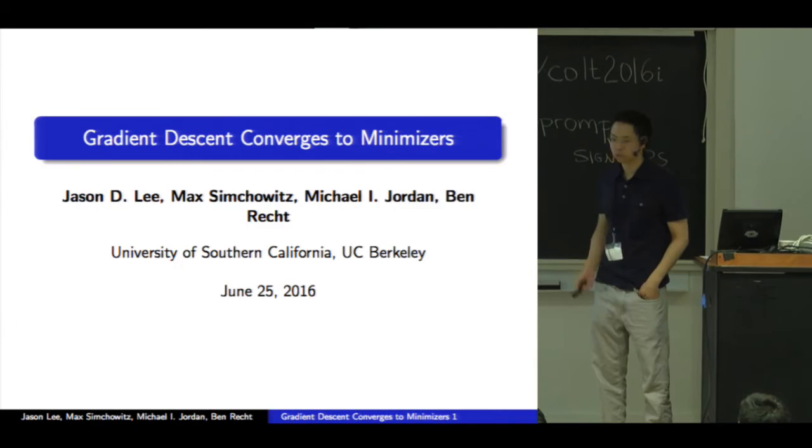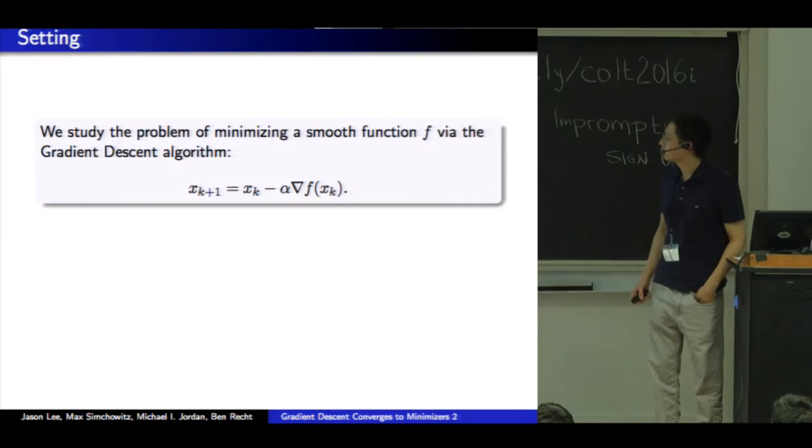All right, I'm going to talk about why gradient descent converges to minimizers. This is joint work with Max Simkowitz, Mike Jordan, and Ben Recht.